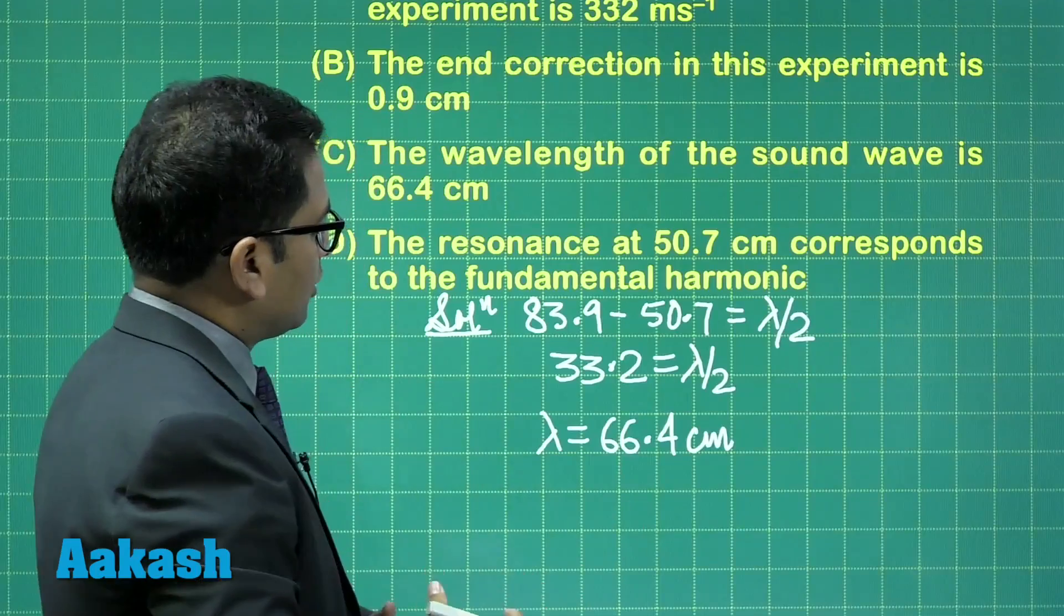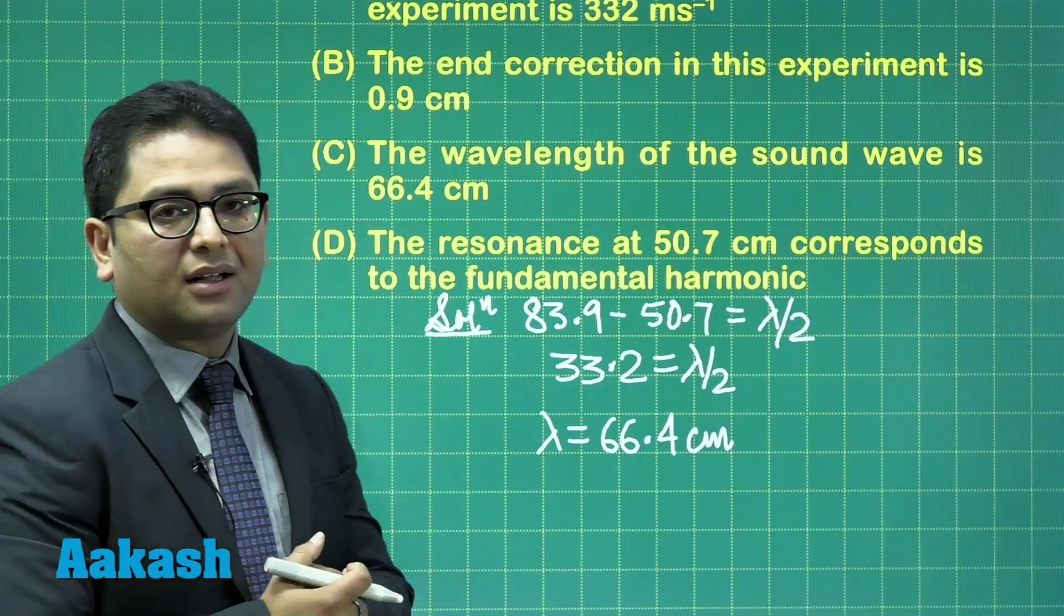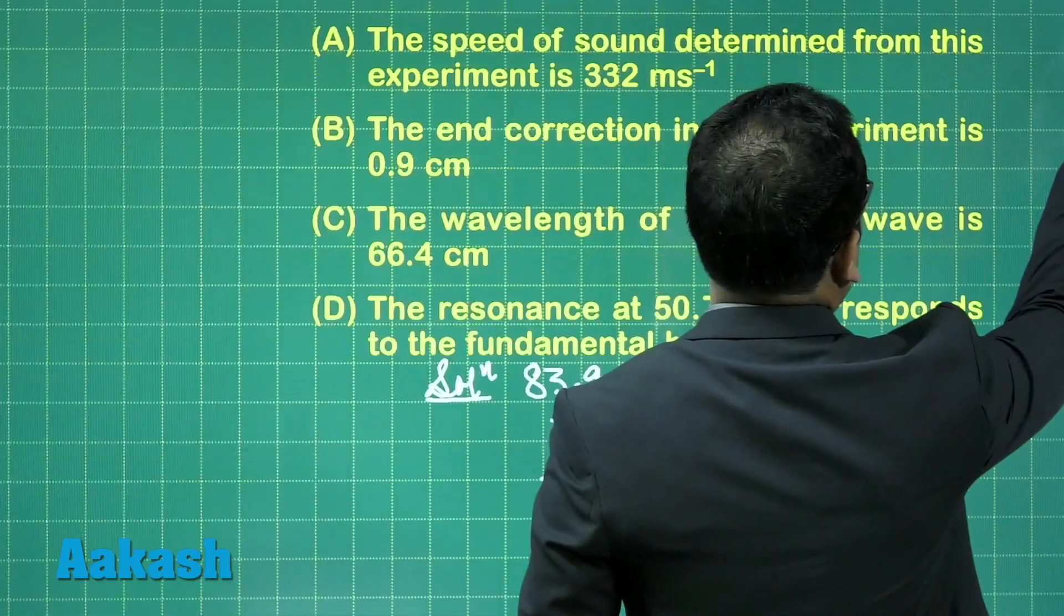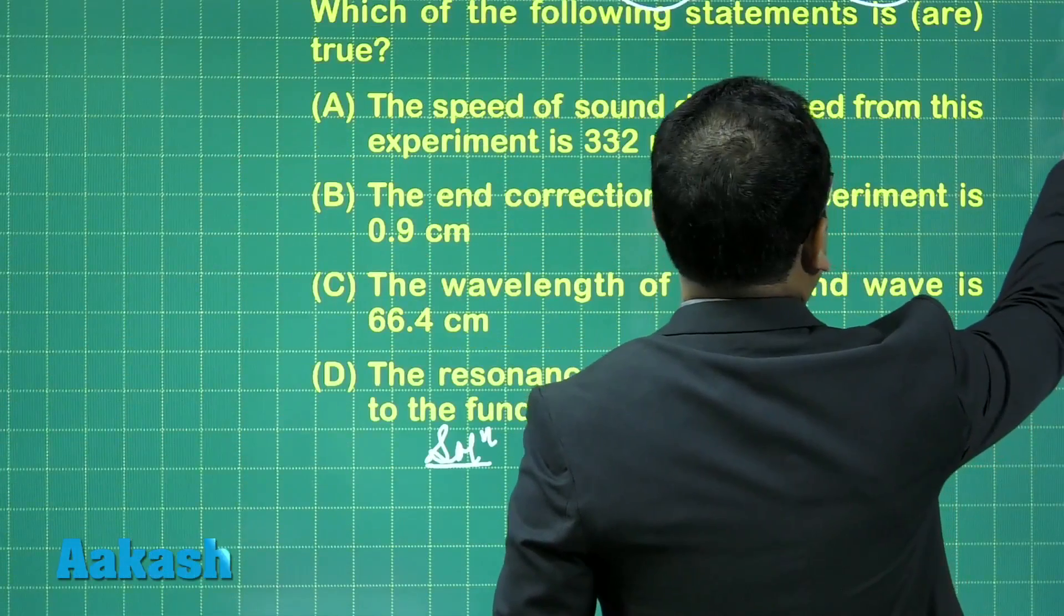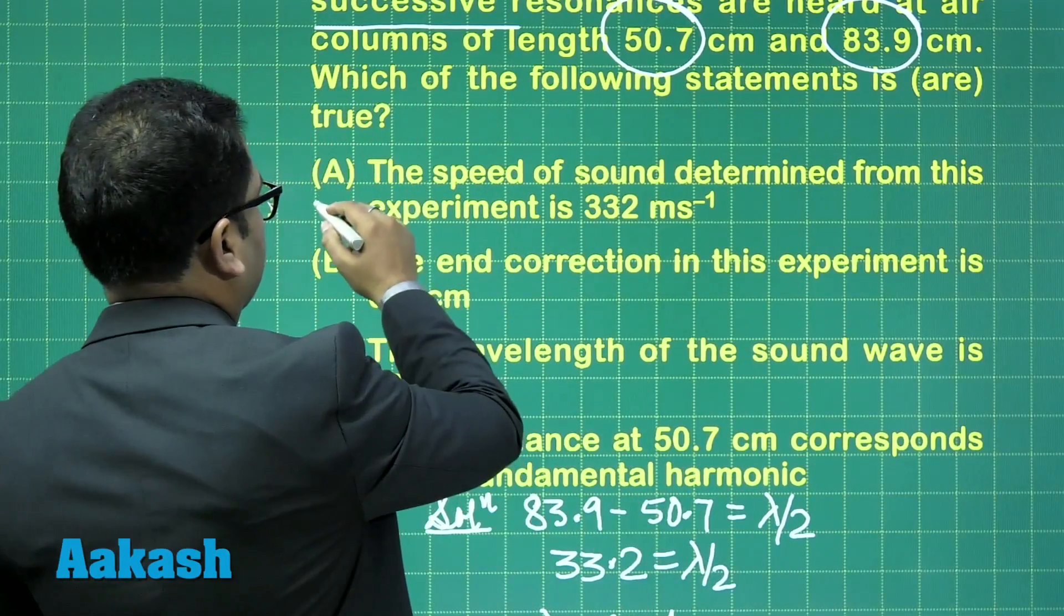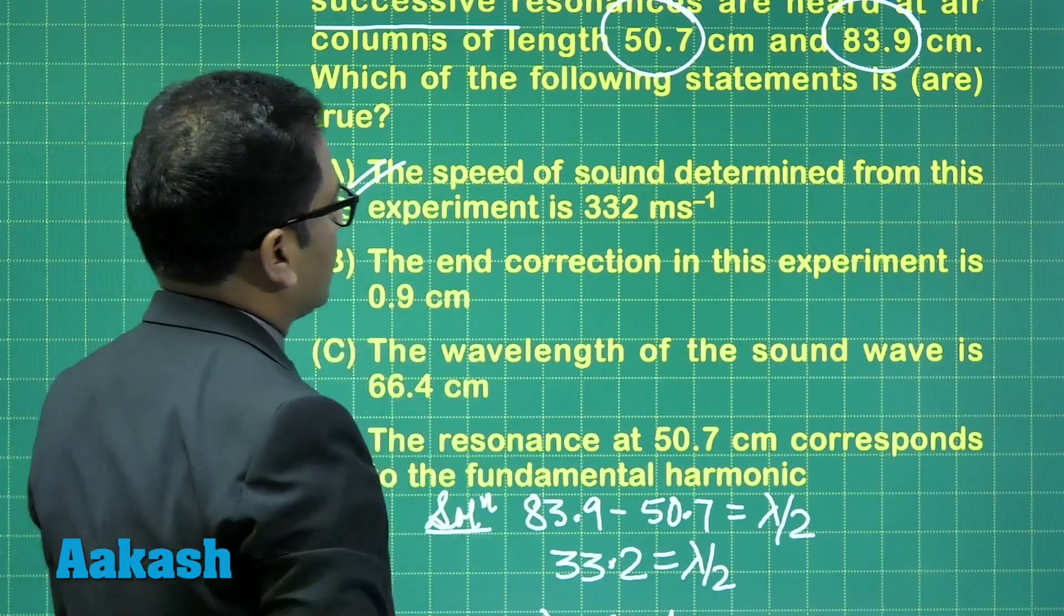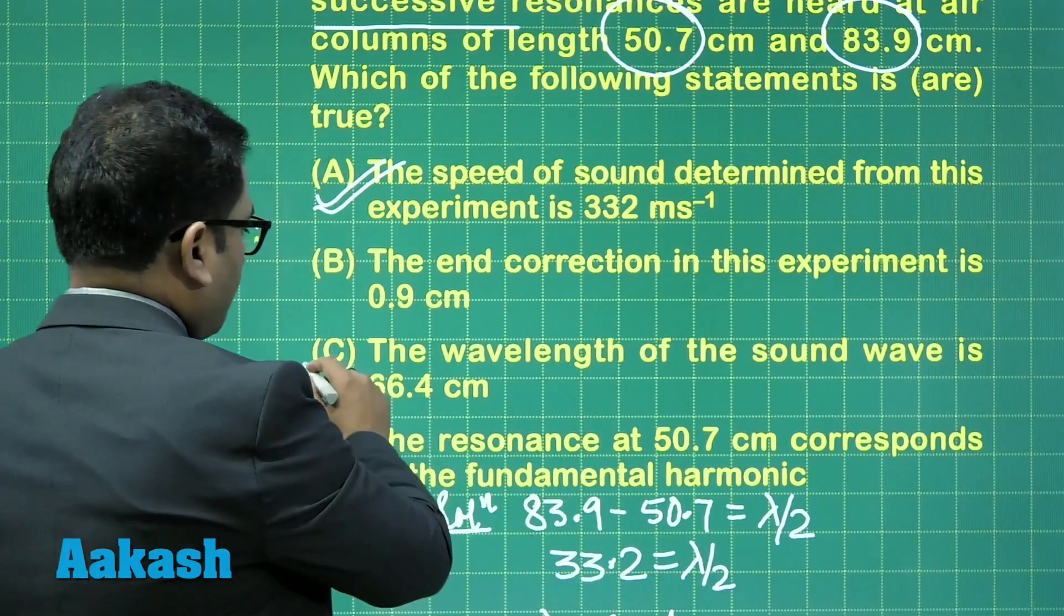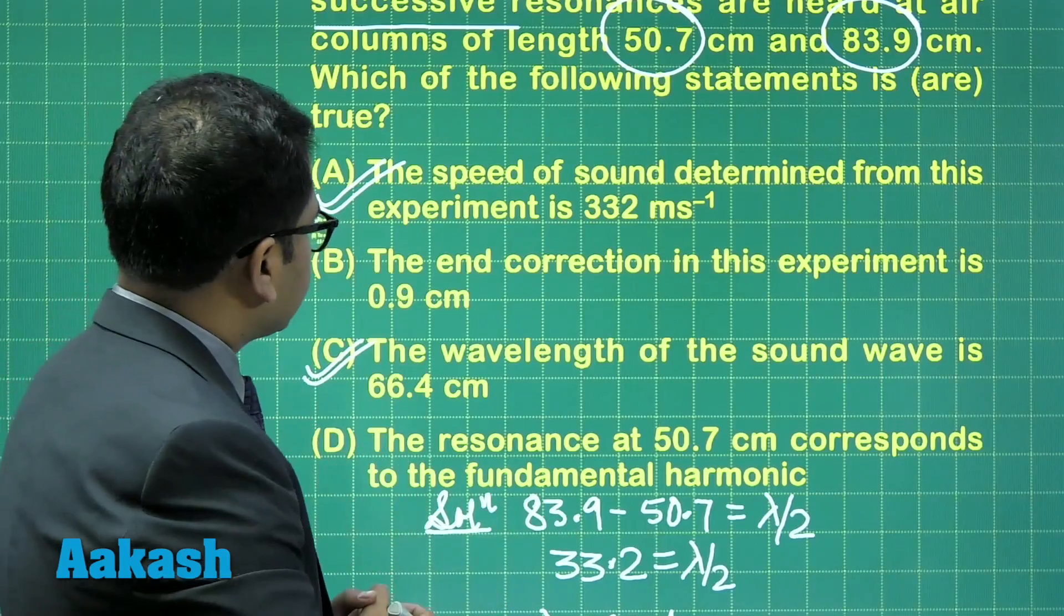By the way, once I get lambda, I also have the frequency 500 hertz, so calculating speed of sound is not a problem. 66.4 centimeter into 500 hertz, when you calculate, the speed of sound would come out to be 332 meter per second. Okay, even the C option has been correct now. The wavelength is 66.4.